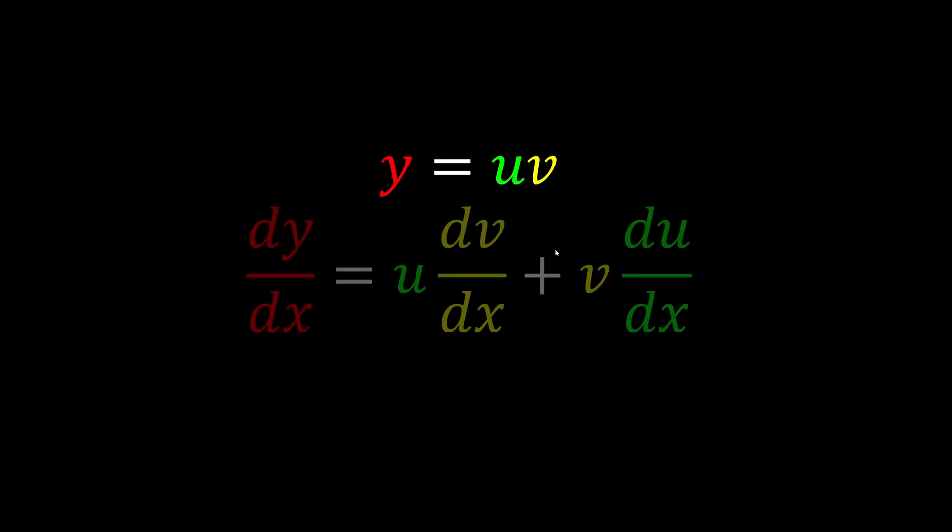If we're going to carry out the differentiation, we use the product rule. Product rule tells us that we keep one as the original u, times with the other function that is differentiated.